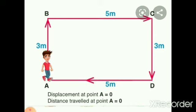Here a boy starts from point A, goes to B, then C, then D, and comes back to A. The distance traveled is: A to B is 3 meters, plus 5 is 8, plus 3 is 11, plus 5 is 16 meters. So the total distance is 16 meters. The displacement is the shortest distance between the initial and final point. Since he starts and ends at A, the initial and final positions are the same, so the displacement is 0.